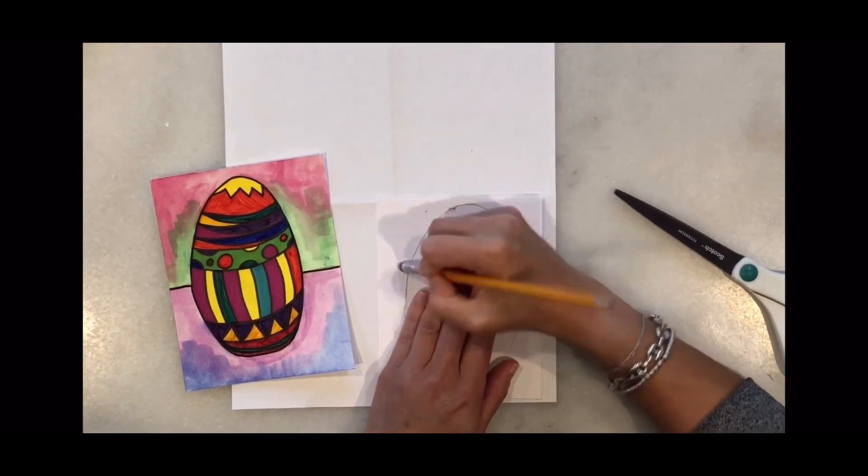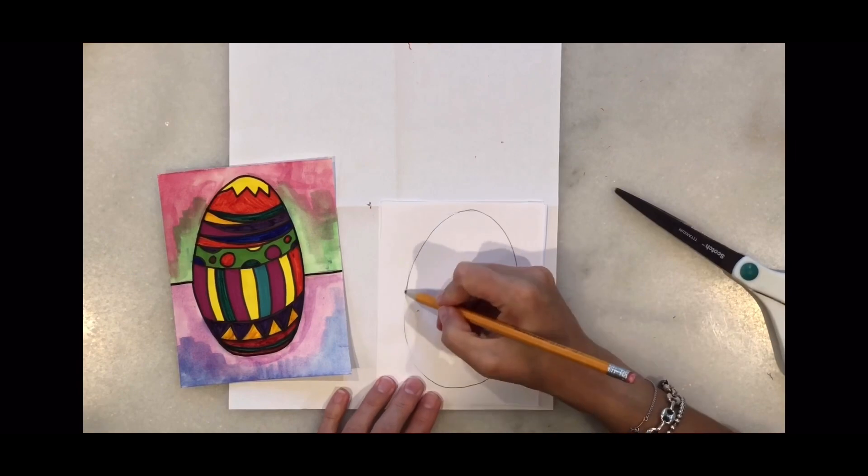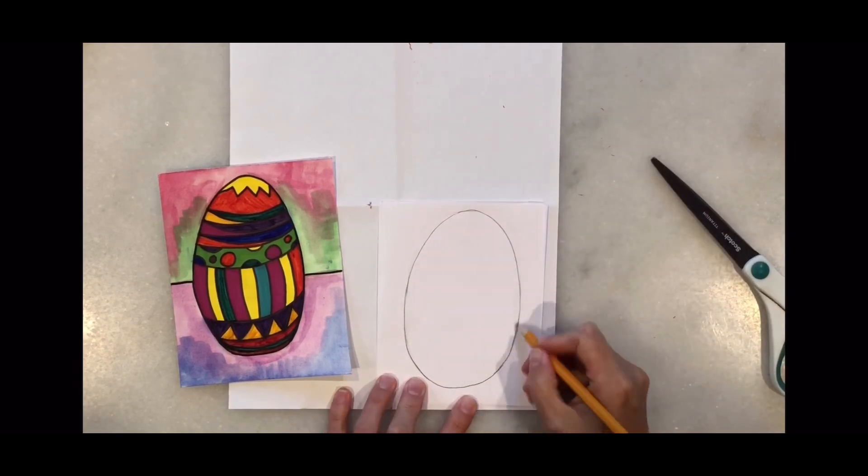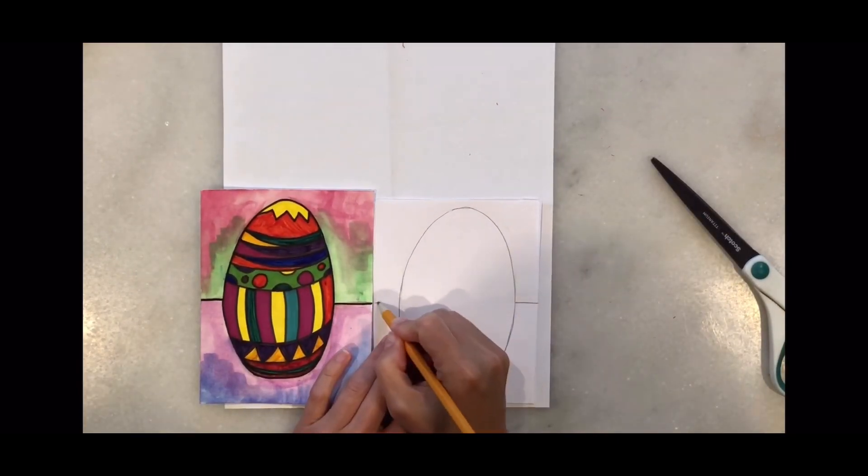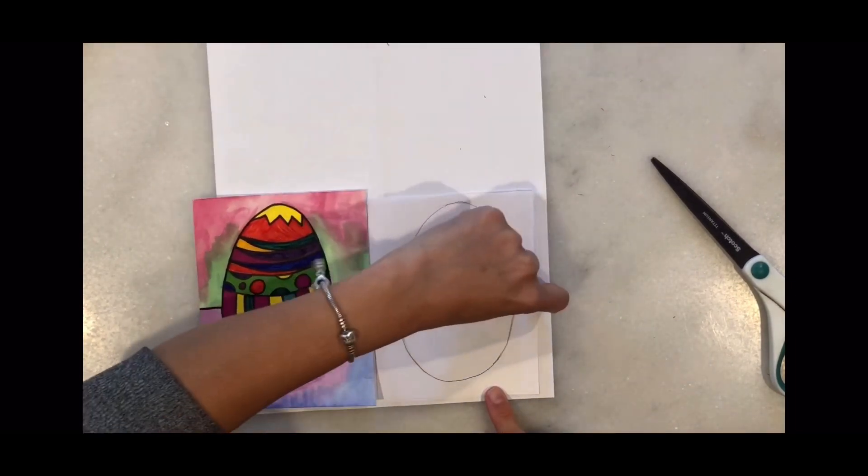Remember to leave a little bit of space on each side, at the top and the bottom. Don't forget to add the lines next to the egg so your egg is not flying in the air.